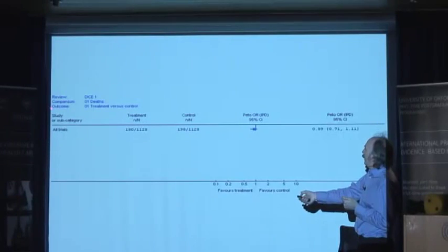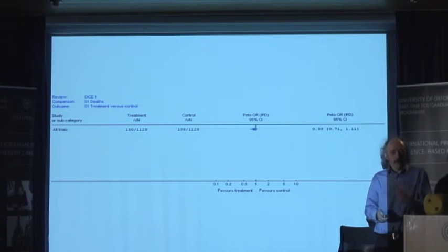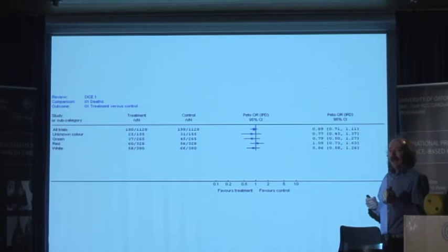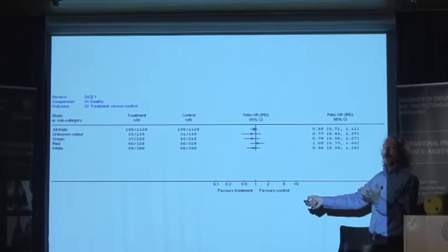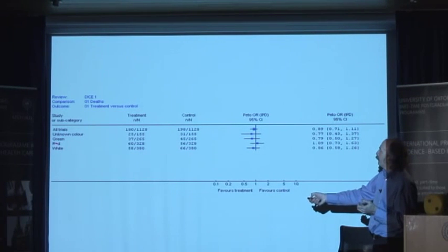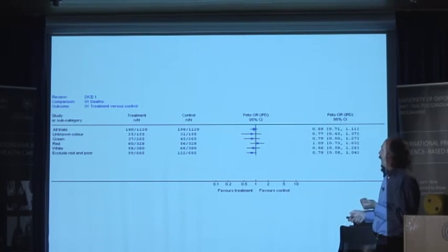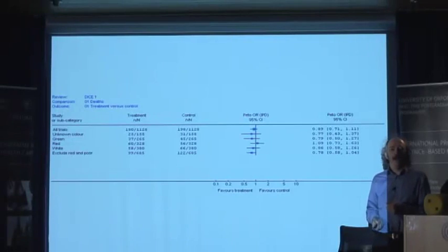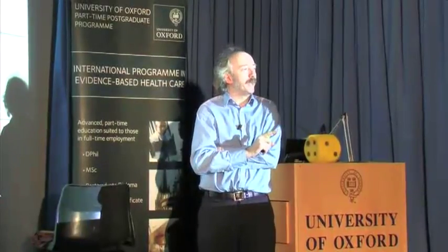When they did all of the trials together — 1,128 rolls versus 1,128 rolls — not a lot was going on. The numbers are different, but you'd expect that by chance. Each dice was of a particular colour. Some students didn't write down the colour, so those are listed as unknown — missing data. There were green dice, red dice, and white dice. And again, it's just scatter. But if somebody came in with a rationale saying, if they couldn't write the colour down they probably don't know what they're doing — discount their results. And if they used a red dice — well, don't include them either.